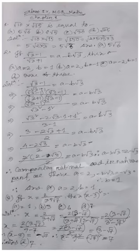The numerator already has (√3 − 1), and we multiply the denominator by (√3 − 1) as well. So the numerator becomes (√3 − 1) × (√3 − 1) = (√3 − 1)², and the denominator becomes (√3 + 1)(√3 − 1), which is a² − b² form.